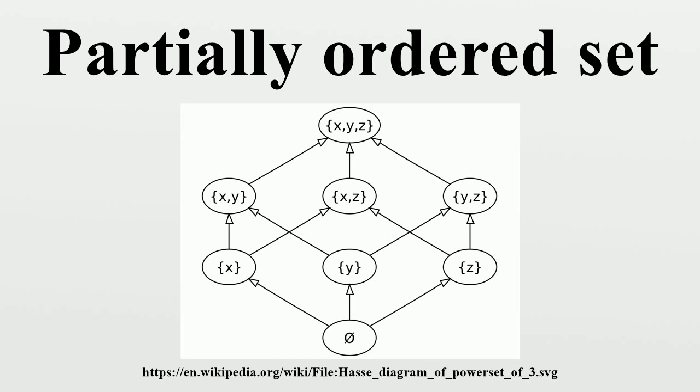Maximal elements and minimal elements: An element G in P is a maximal element if there is no element A in P such that A > G. Similarly, an element M in P is a minimal element if there is no element A in P such that A < M. If a poset has a greatest element, it must be the unique maximal element, but otherwise there can be more than one maximal element. And similarly for least elements and minimal elements.